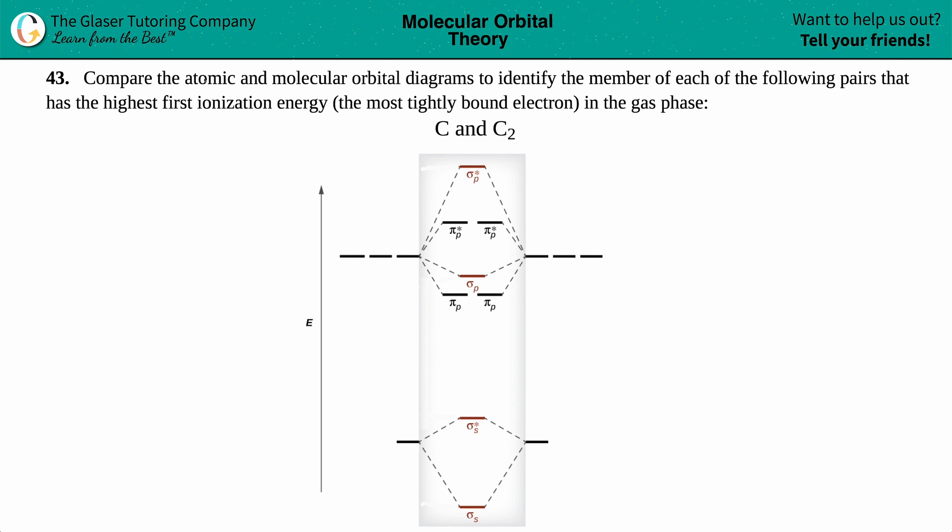Number 43, compare the atomic and molecular orbital diagrams to identify the member of each of the following pairs that has the highest first ionization energy, the most tightly bound electron in the gas phase. And then we have to decide whether carbon or the molecule C2 will have the highest first ionization energy.